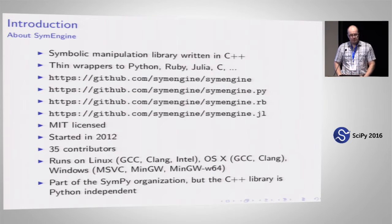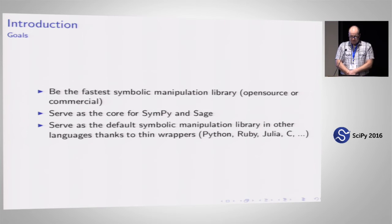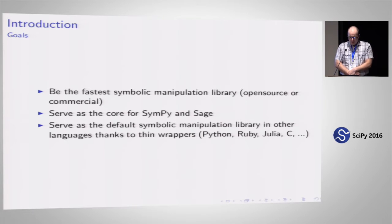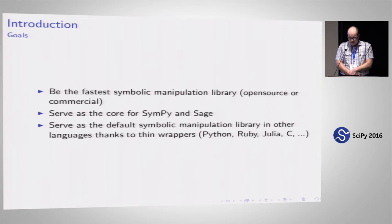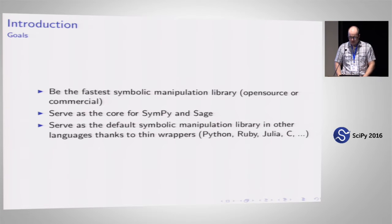The C++ library is Python independent — it doesn't have anything to do with Python. The goals of SymEngine are to be the fastest symbolic manipulation library, both open source and commercial, to serve as the core for SymPy and Sage, and also to serve as the default symbolic manipulation library in other languages thanks to thin wrappers in Ruby, Julia, and others.